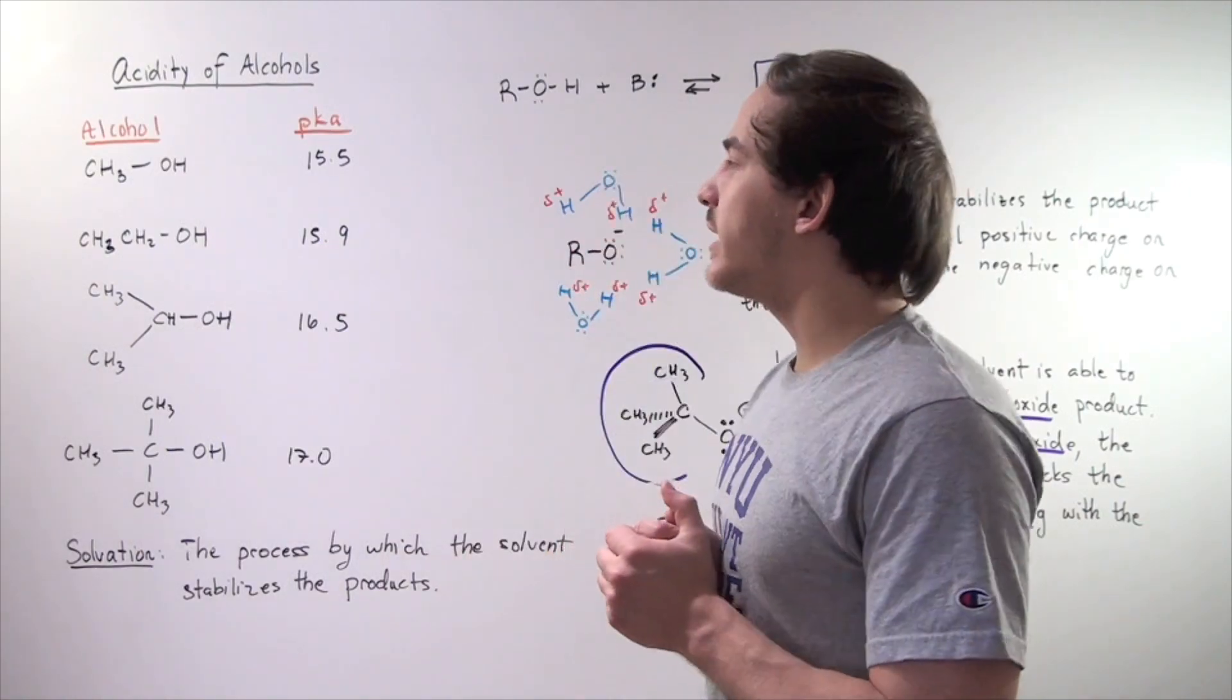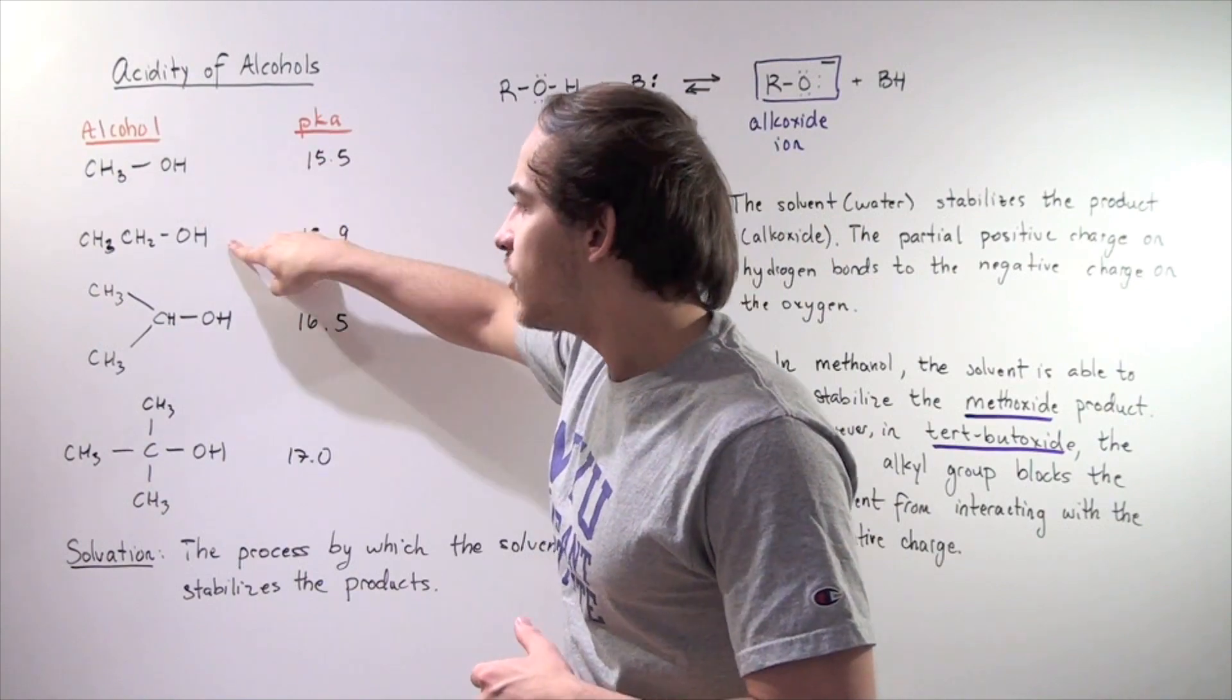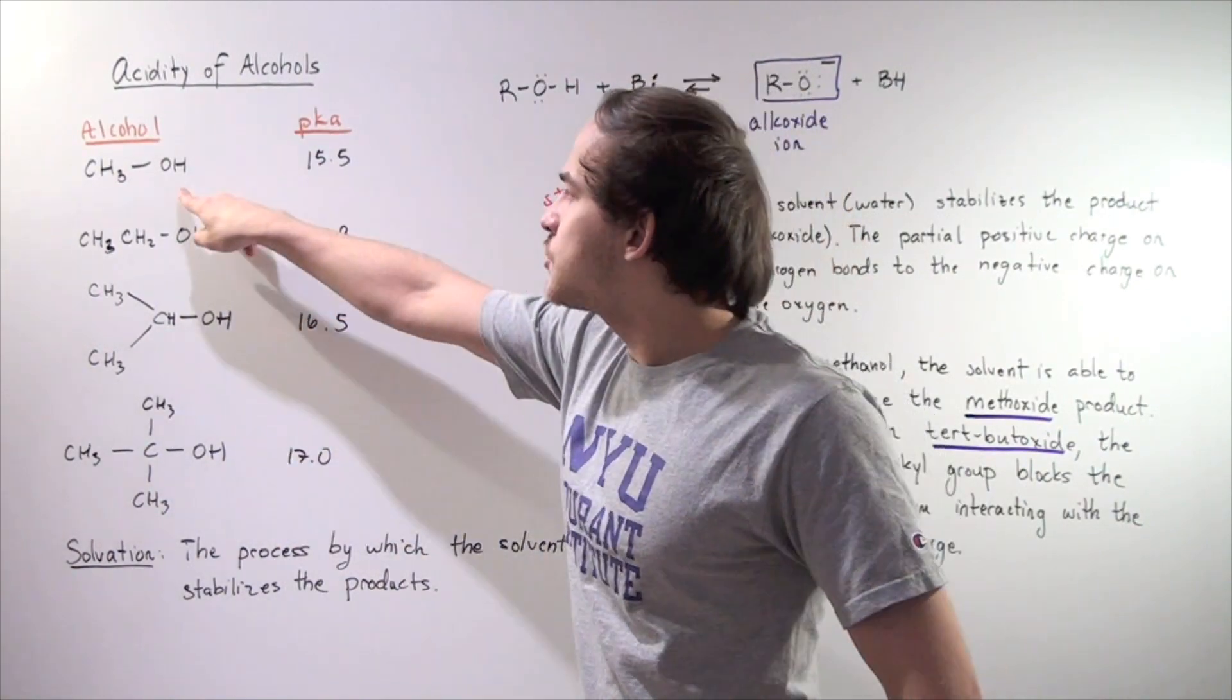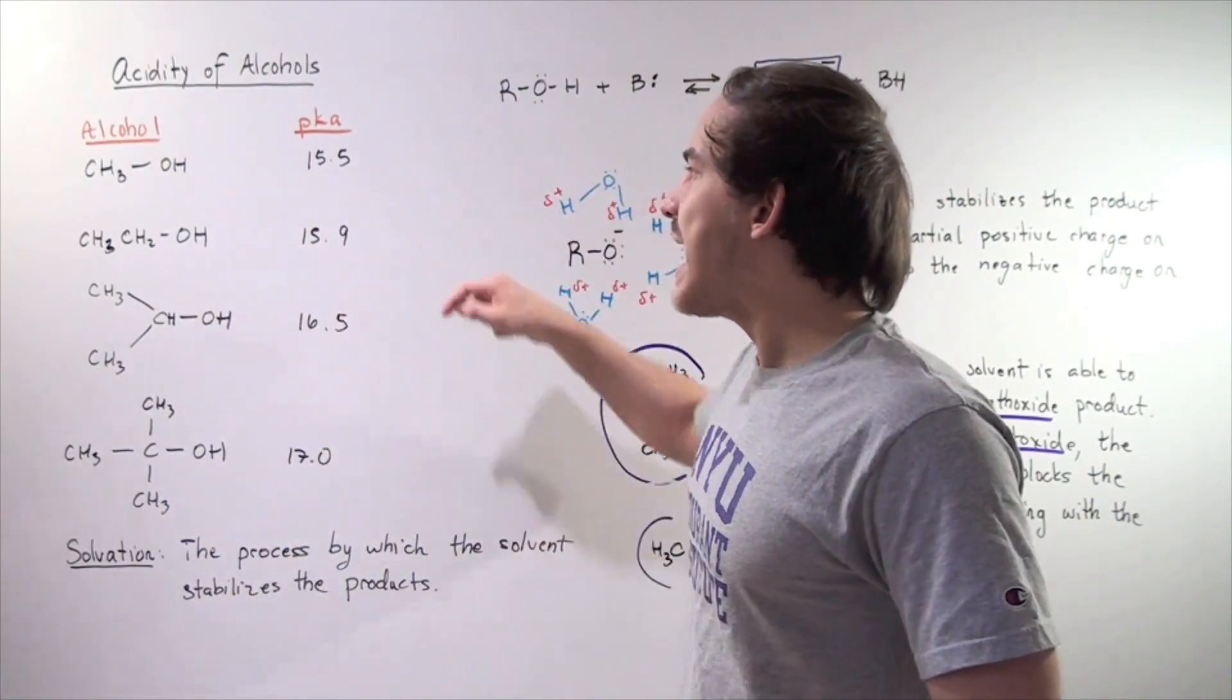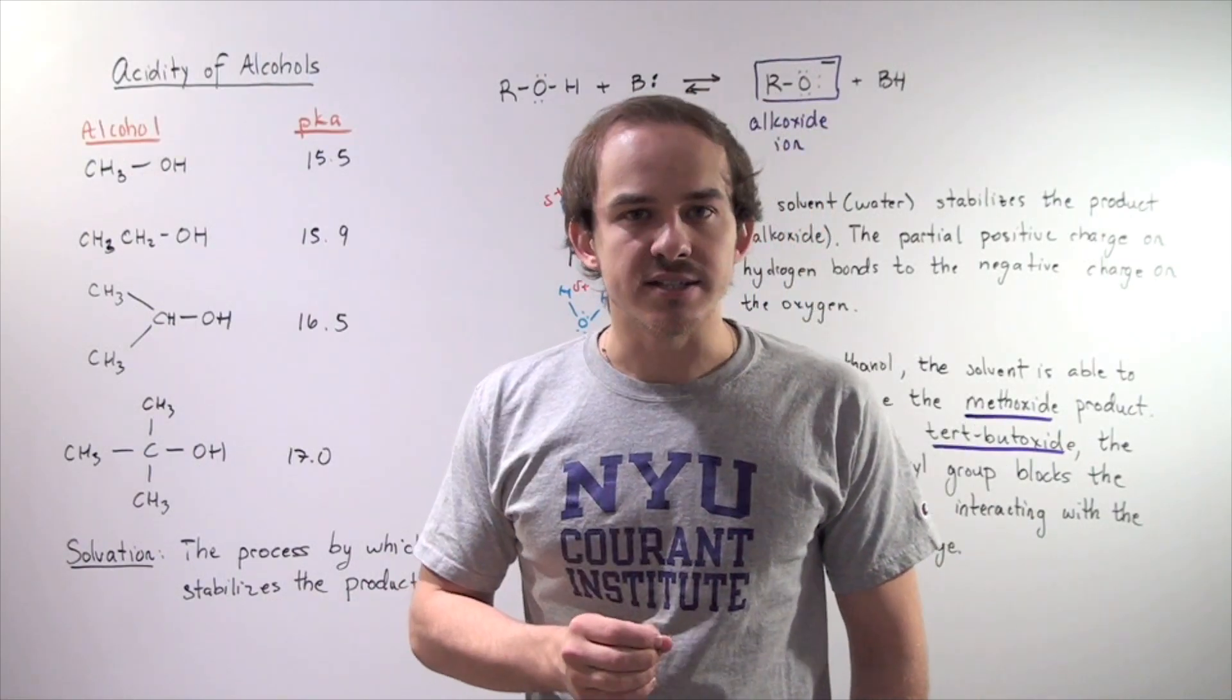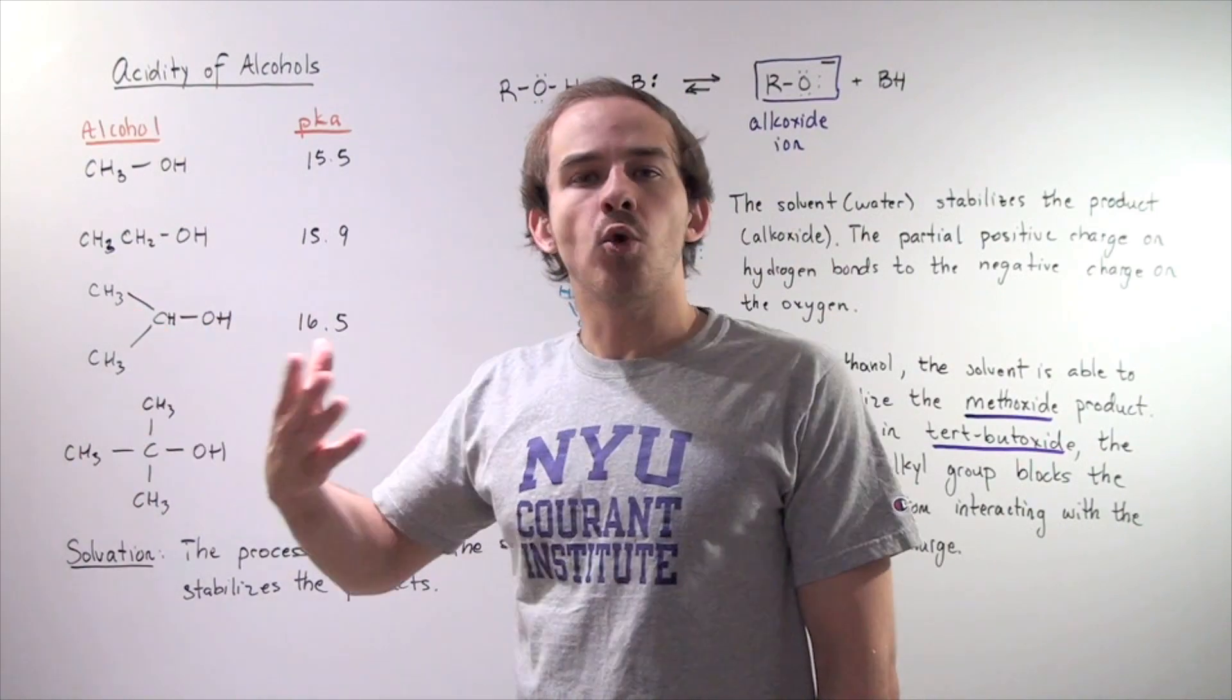So let's begin by looking at the following four alcohols: methanol, ethanol, 2-propanol, and tert-butyl alcohol, and each of these has a respective pKa. Now recall, as pKa increases, our acidity decreases. So as we go down the list, our alcohols become worse acids.